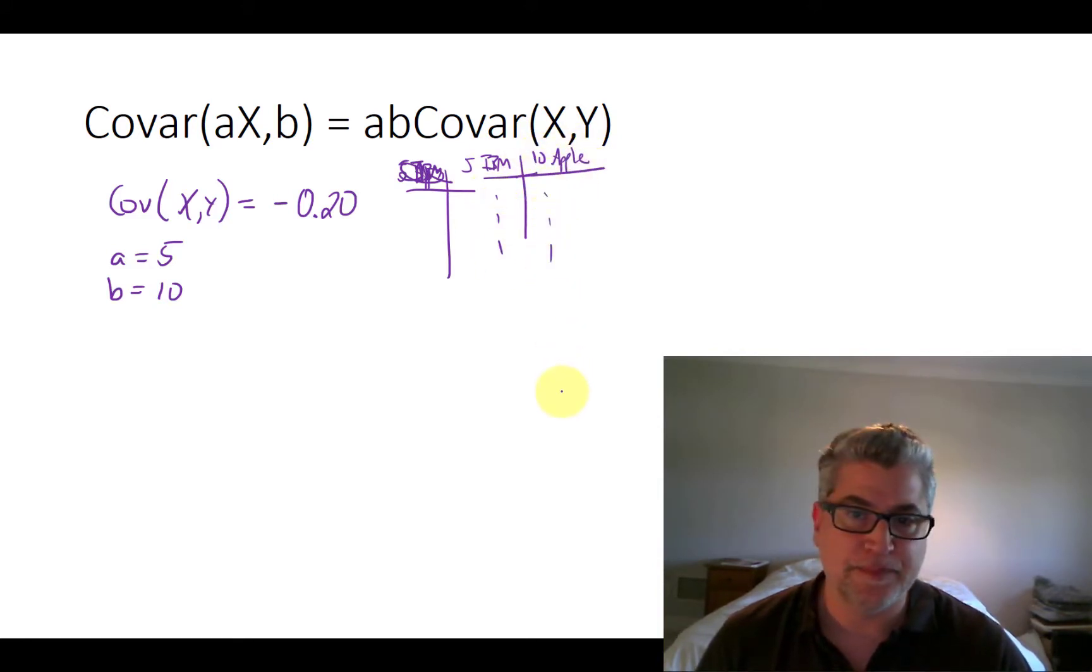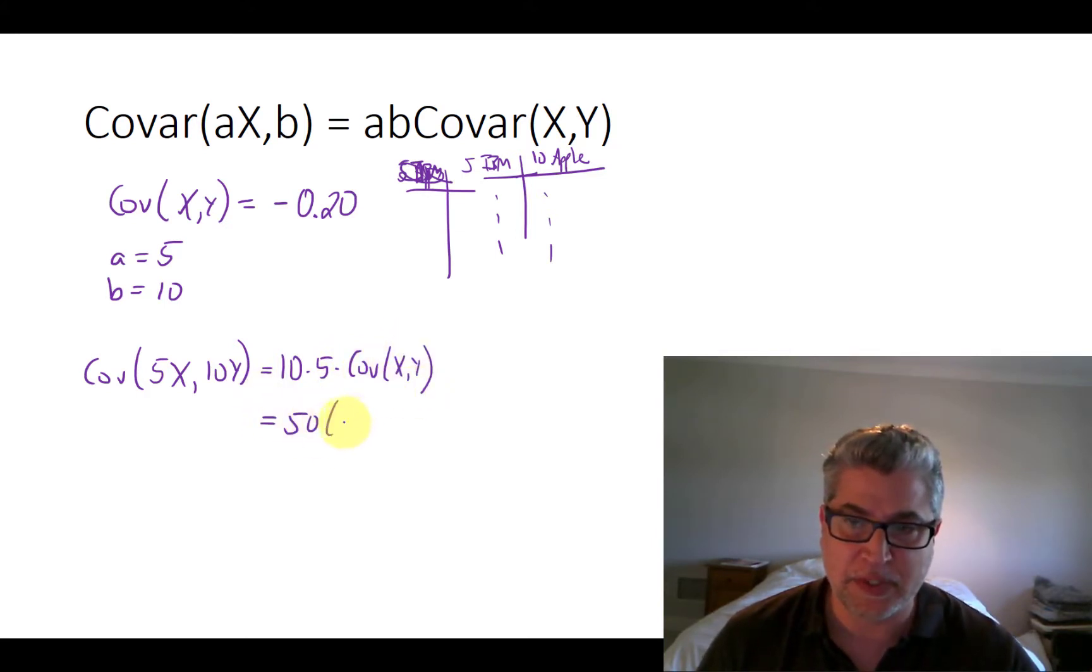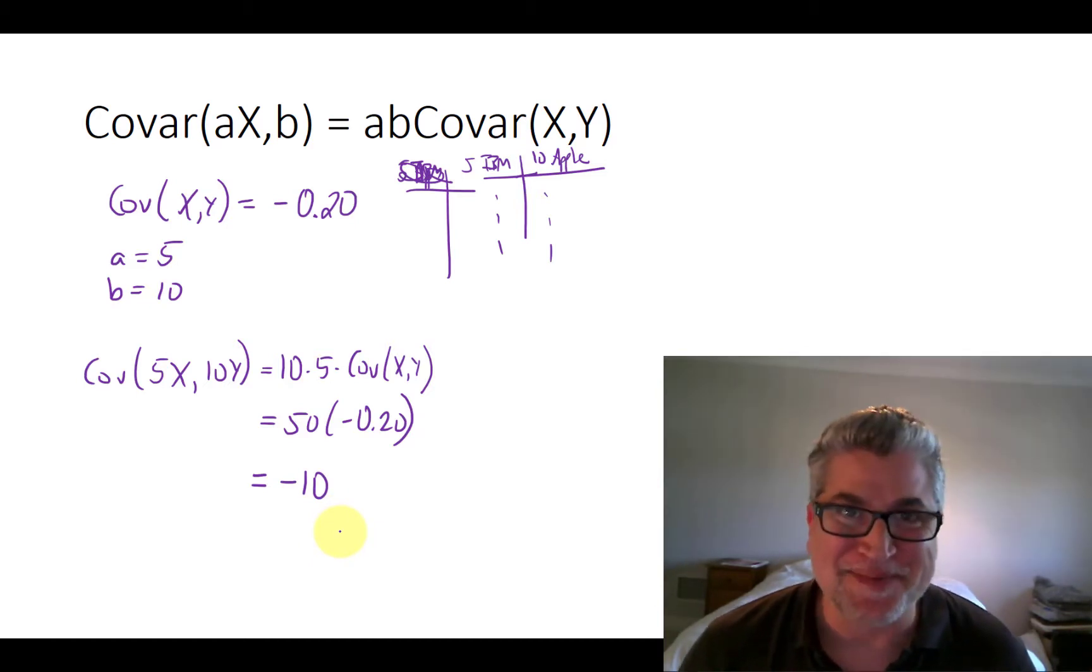We have all that data. Then the covariance is just going to be 10 times five times the original covariance. So it's going to be 50 times negative 20%. So that is going to be negative 10. Okay. So that's it. Thanks for listening. Bye-bye.